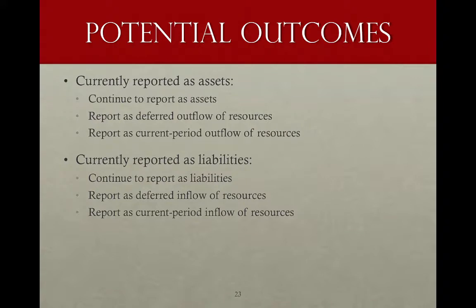There are six outcomes to the board's approach to analyzing these existing asset and liability balances. Assets could continue to be reported as assets, or the board could determine they should be reported as deferred outflows or as current period outflows. And liabilities could either continue to be reported as liabilities or henceforth be reported as deferred inflows or current period inflows.